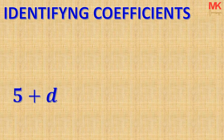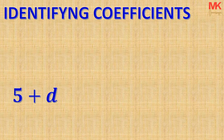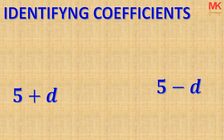Now, if we have the expression 5 plus D, do not make the mistake of saying that the coefficient of the letter D is 5, because the number 5 and the letter D are joined together by an addition operation. Whenever a number and a letter are joined by an addition operation, we cannot say that the number is the coefficient of the letter. Similarly, if we have the expression 5 take away D, we cannot say that 5 is the coefficient of D — by doing that you will be breaking the math rule.